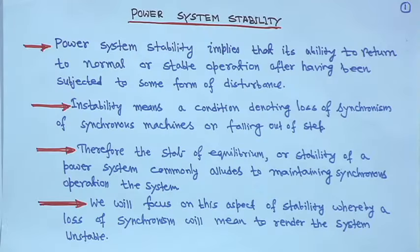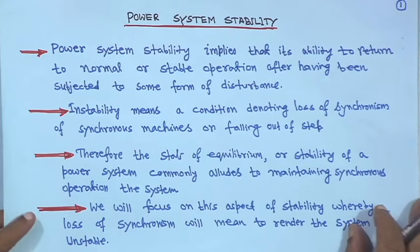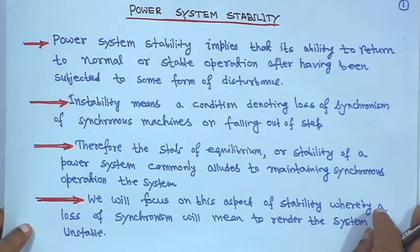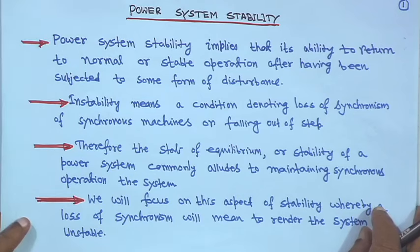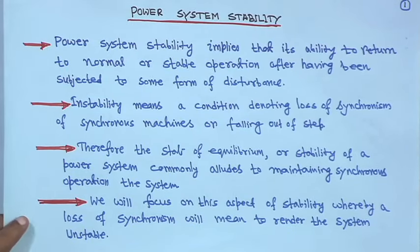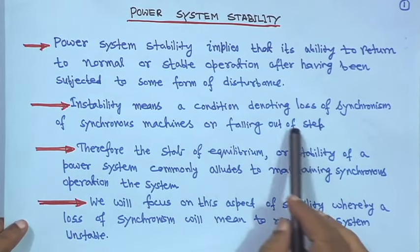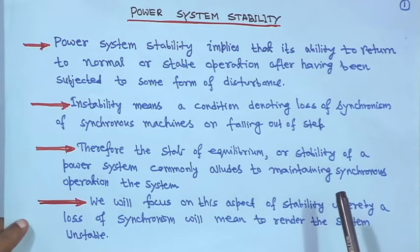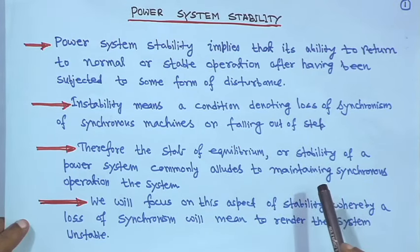Power system stability implies the ability to return to normal or stable operation after having been subjected to some form of disturbance. In a power system, disturbances are always on — like lights being switched on, fans switched off, loads switched on and off — it is a continuous process. Instability means a condition denoting loss of synchronism of synchronous machines, or falling out of step — that is instability.